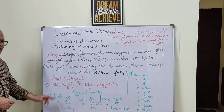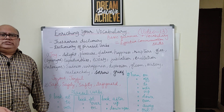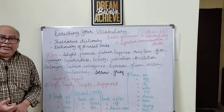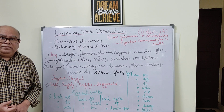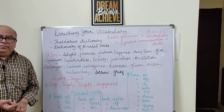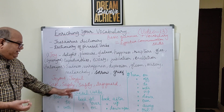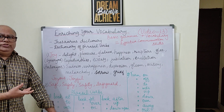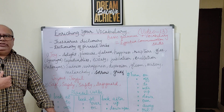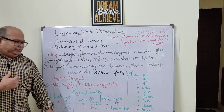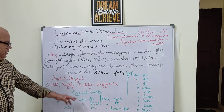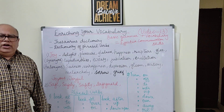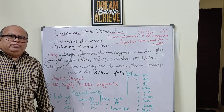Look at another example: 'safe.' Its other forms are: safely, safety, and safeguard. Think about how you are going to use these words in your language. I have given you some examples, so now you know how to go about building word families.